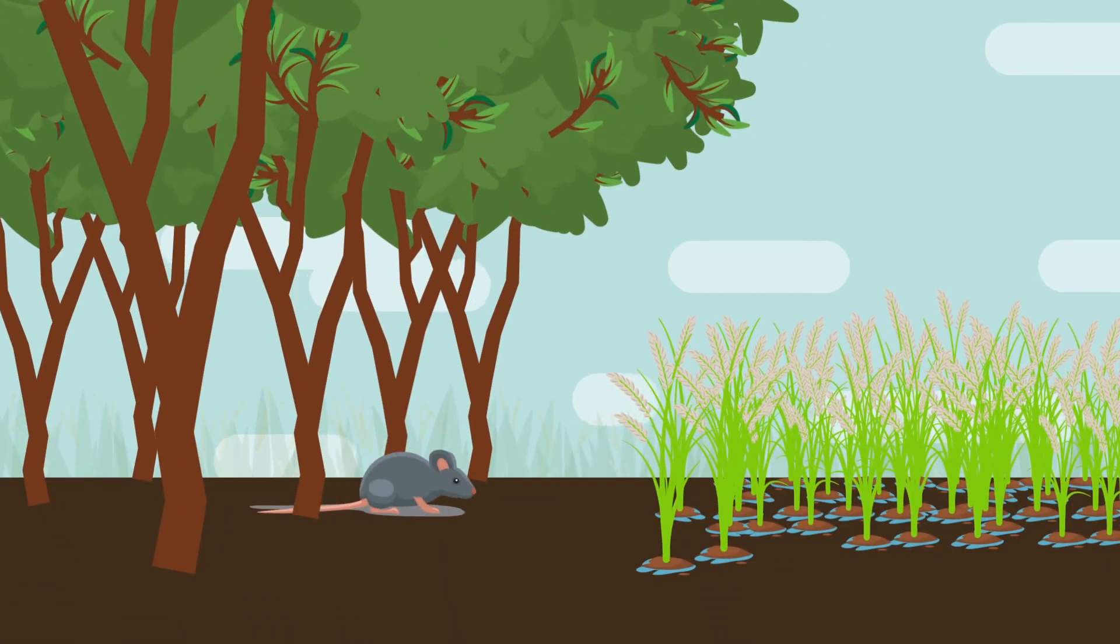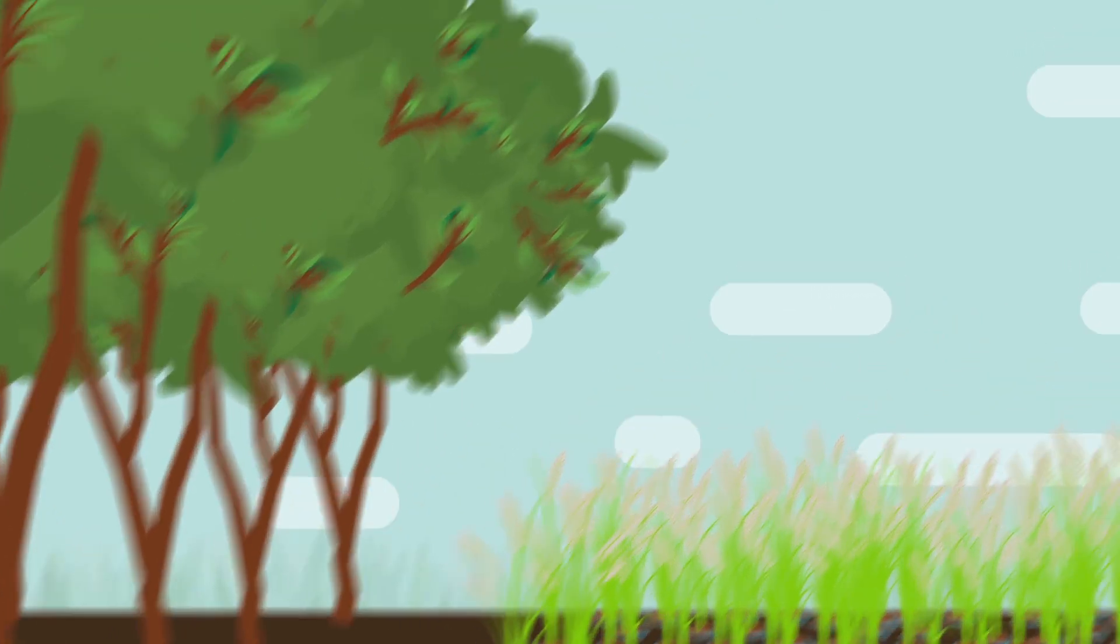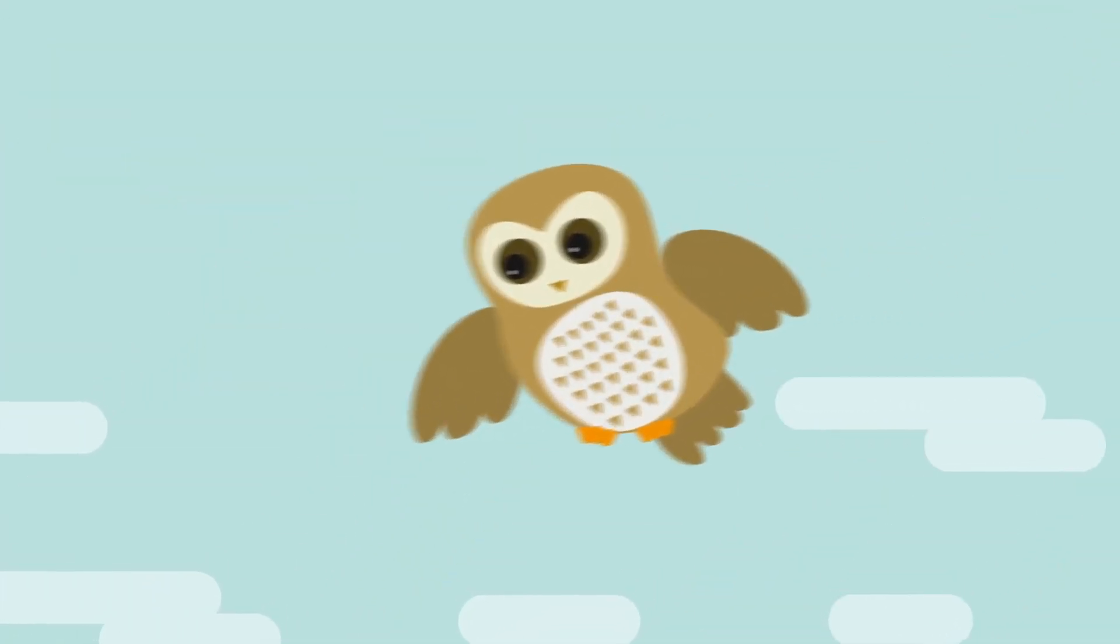And nature's predators can be used to protect crops too. In many areas of the world, farmers use barn owls to control rat populations.